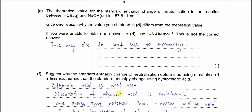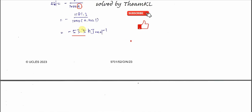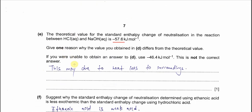Part e: the theoretical value for the standard enthalpy change of neutralization for HCl and NaOH is −57.6 kJ/mol, but our calculated value is −53.5 kJ/mol. Give one reason why the values differ: it is always because of heat loss to the surroundings. Not all heat is absorbed by the water, so the temperature increase is less, and the calculated ΔH is less exothermic.